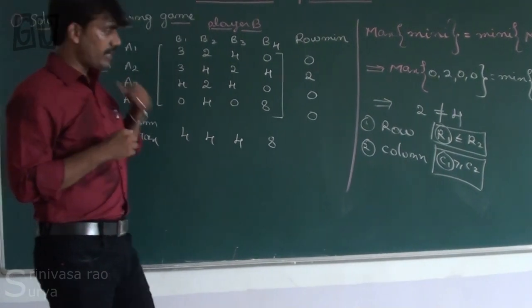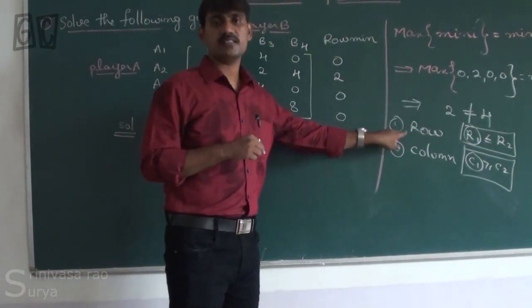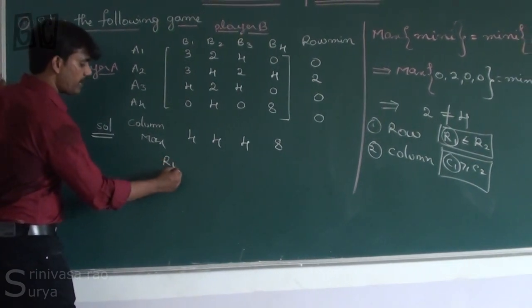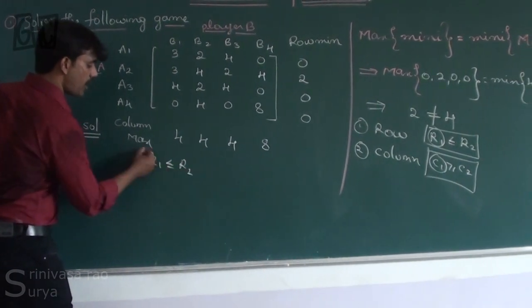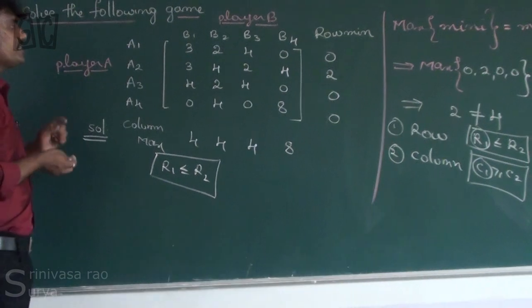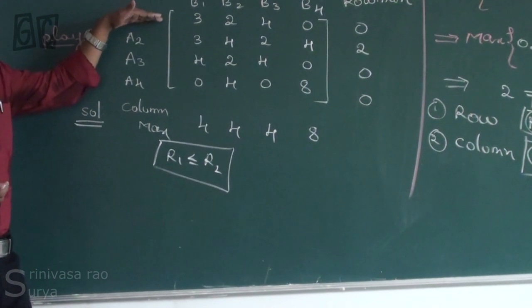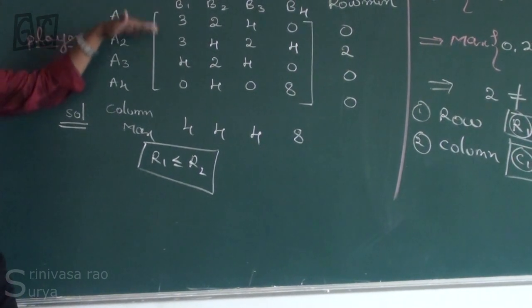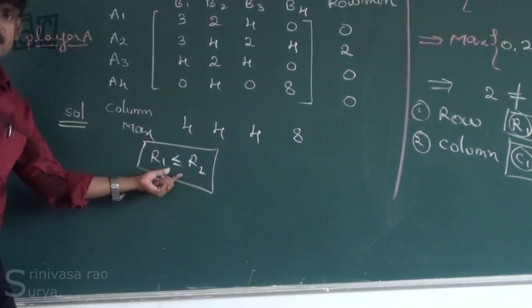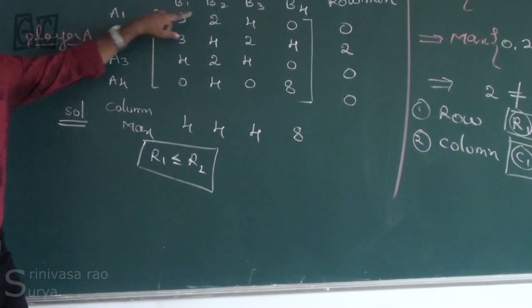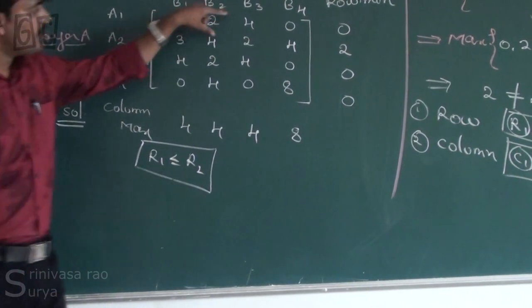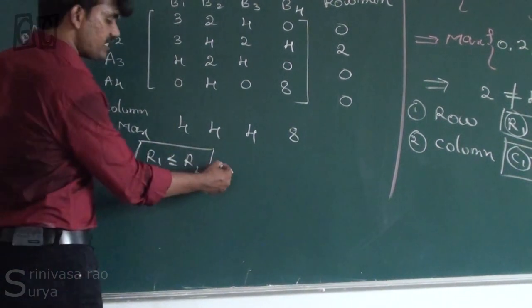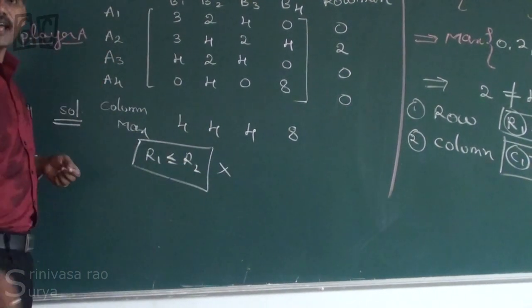Applying the first step — row comparison. Comparing R1 ≤ R2: 3 equals 3, but 4 is not less than 2. So R1 ≤ R2 is not satisfied.